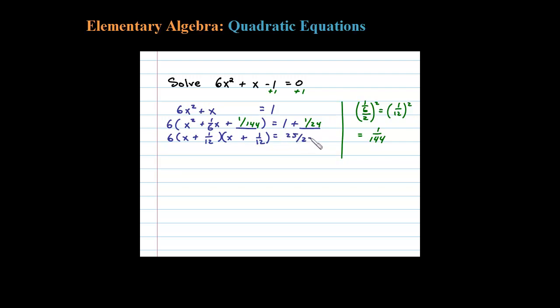So what's left here is 6 times (x + 1/12)² equals 25 over 24. Let's go and divide both sides by 6 before we extract the root. That'll leave us with (x + 1/12)² equals